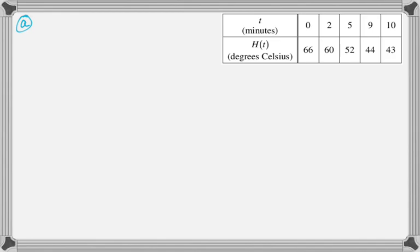So the first question: use the data in the table to approximate the rate at which the temperature of the tea is changing at time t equals 3.5. Show the computations. All right, so this is pretty straightforward. We're trying to approximate H'(3.5).